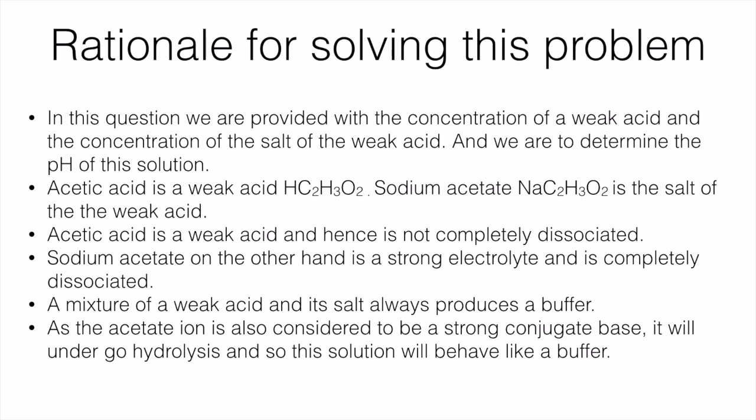If you use the Bronsted-Lowry theory, you will see that acetic acid, when it dissolves in water, produces a conjugate acid and a conjugate base. The conjugate base in this case would be the acetate ions. Acetate ions are called strong conjugate bases because it is a product of dissociation of a weak acid. And strong conjugate bases undergo hydrolysis. So this mixture of a weak acid and the salt of the weak acid usually produces a buffer, and we can use the Henderson-Hasselbalch equation to solve it.